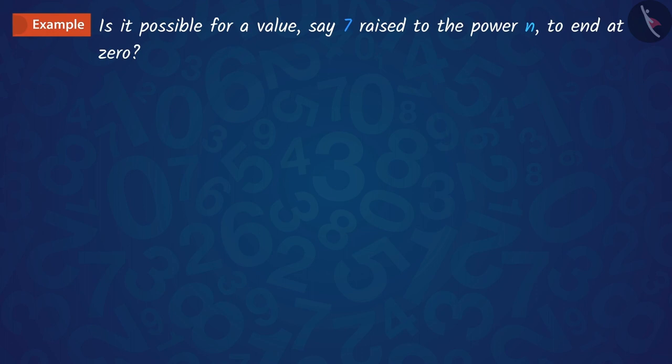Check whether there is any value of n for which 7 raised to the power n ends with digit 0. We know that if a number ends with 0, it will be divisible by 10.